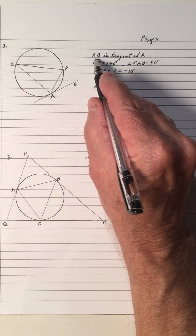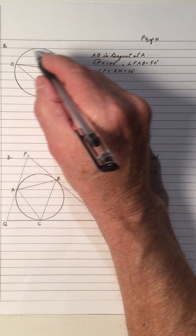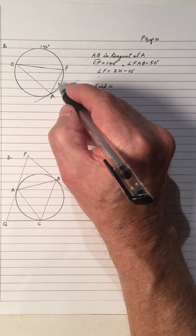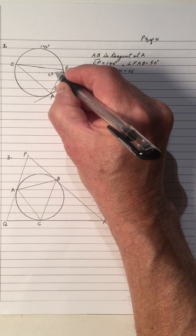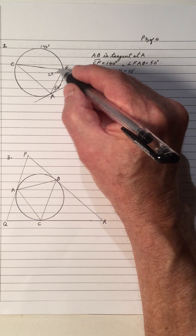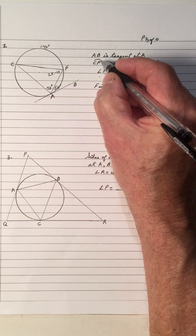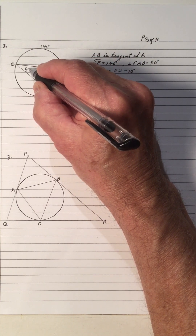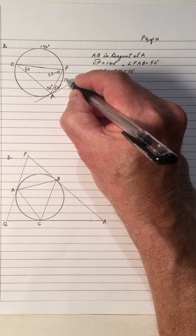Now we have another question. AB is tangent at A — so A is the point of tangency. Arc CF is 140 degrees, and angle FAB is 50 degrees. Angle F equals 2X minus 10, and we want to find X. Since arc CF is 140°, the inscribed angle at A intercepting that arc is 70 degrees. The angle formed by the tangent and the chord is equal to the inscribed angle C.